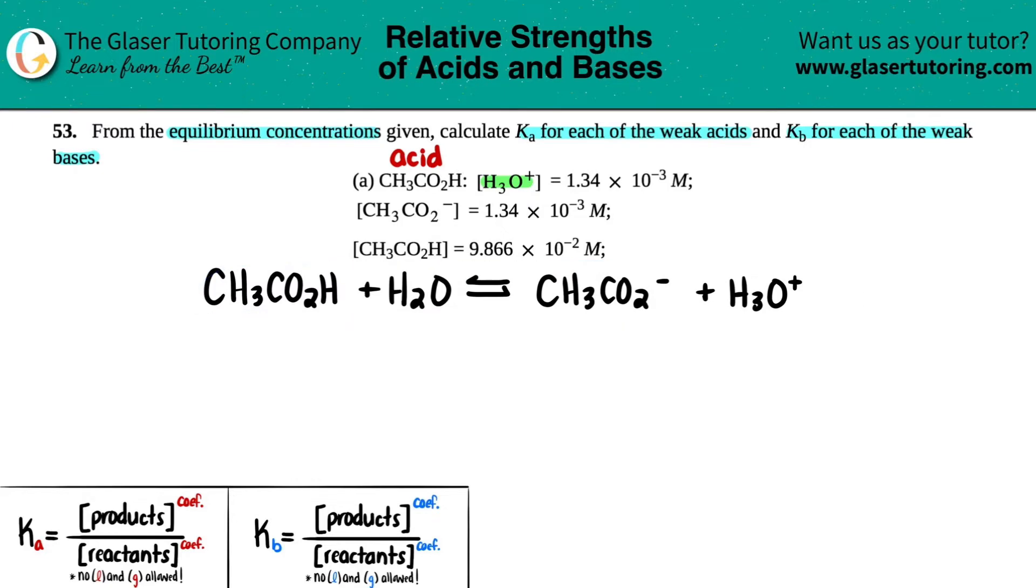Now, let's just write out the concentrations that are given. They told us that we had an H3O plus concentration of 1.34 times 10 to the negative 3 molarity. They told us that we had an acetate concentration of the same number, so 1.34 times 10 to the negative 3 molarity. And then the acetic acid, they told us, was 9.866 times 10 to the negative 2 molarity.